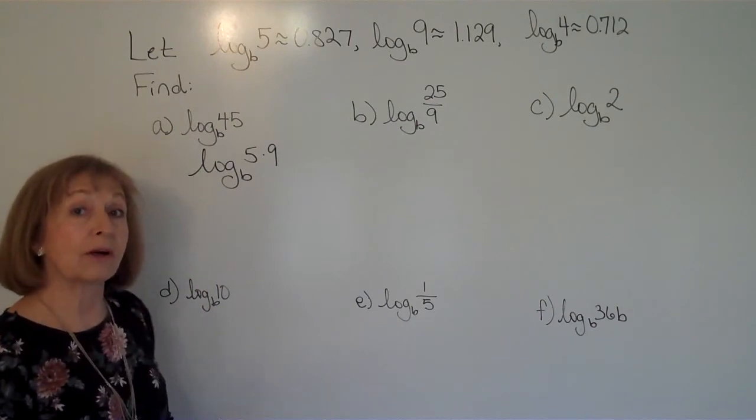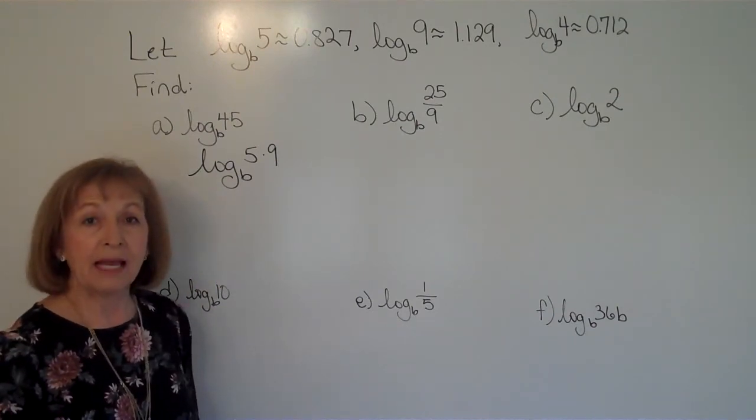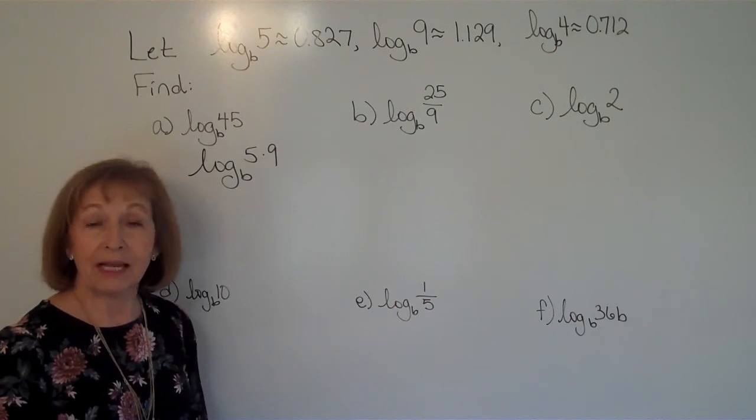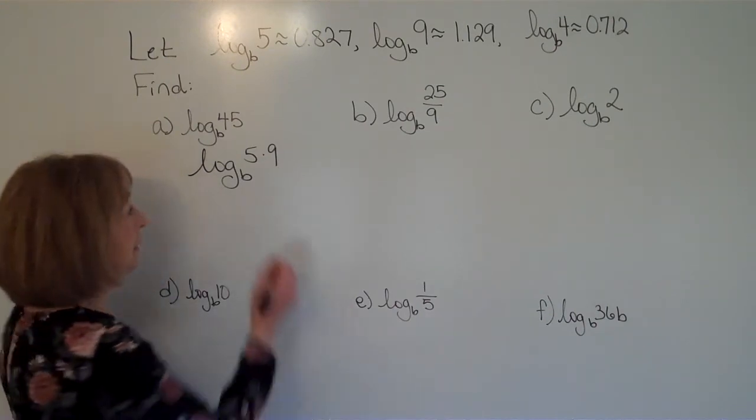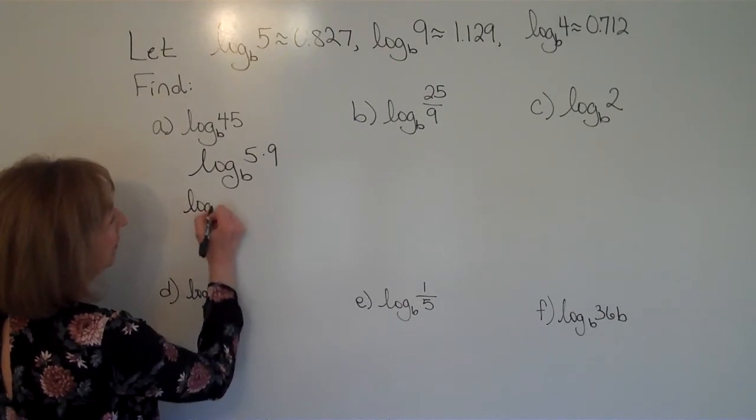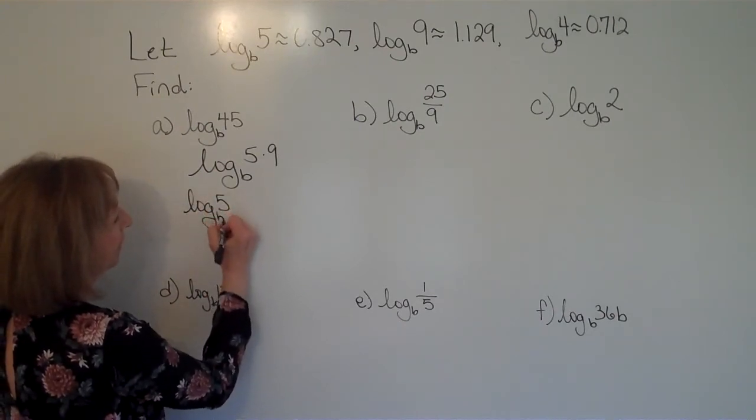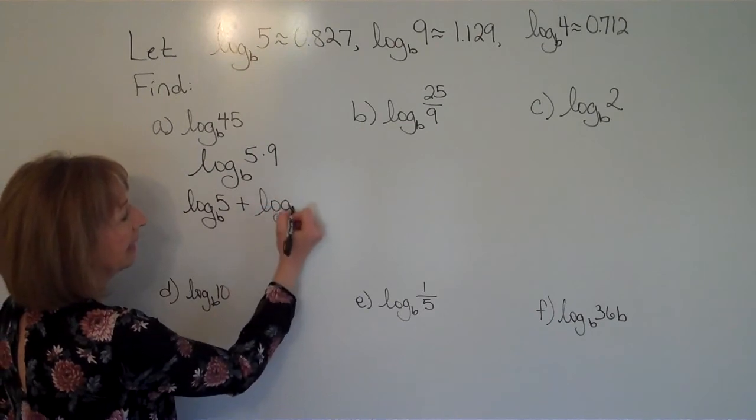Remember, logarithms are exponents. And when we have the exponent on a multiplication, when we have the same base, we keep the base and we add the exponents. So it's going to be log base b of 5 plus log base b of 9.